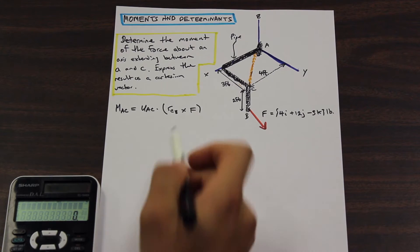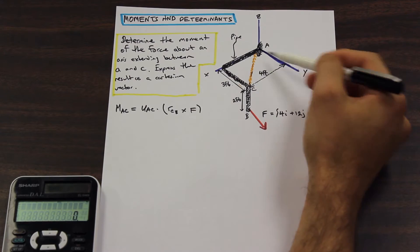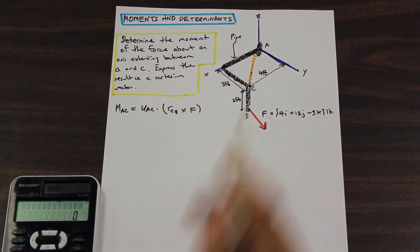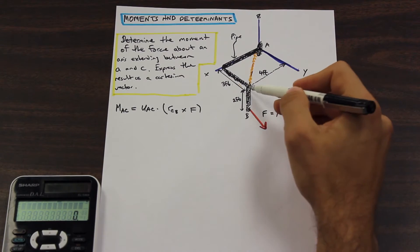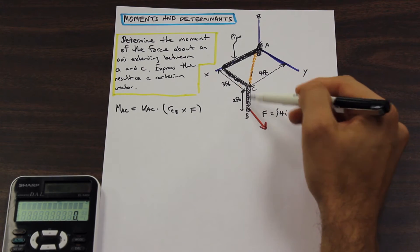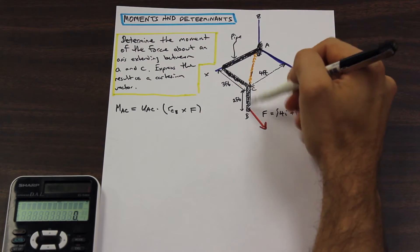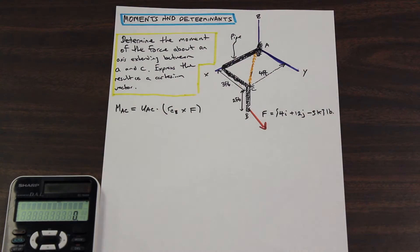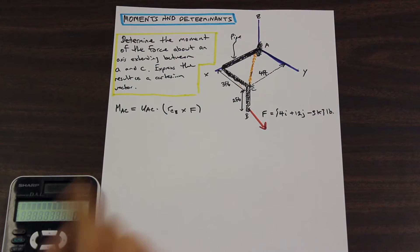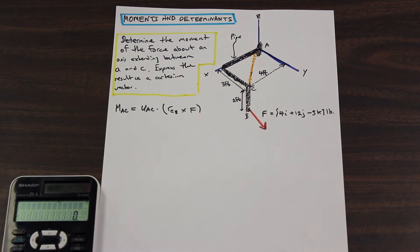So this formula — just memorize how it works. It applies to any kind of problem like this where you have a piping system with a force acting on it. It's the perpendicular distance CB, the position vector of that, times the unit vector of the axis in which we want to evaluate, and this is going to be crossed by the force. So we need to find each component of this formula in order to use it.